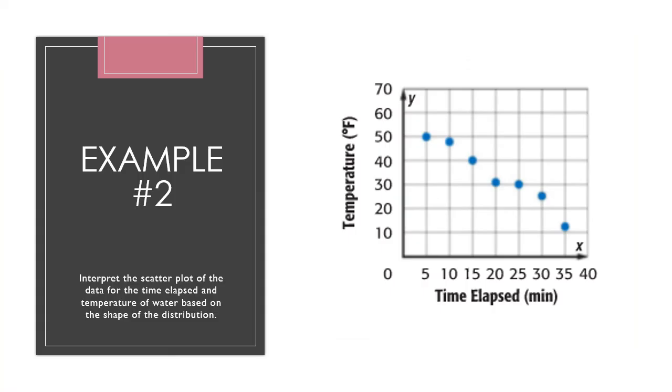Let's look at example number two. It says interpret the scatter plot of the data for the time elapsed and temperature of water based on the shape of the distribution. So there's three big things I want you to tell me. What do you notice as the time increases? So first thing we would write down, as time increases, the temperature of the water decreases. That's my first thing. Next thing, you tell me, is this a positive association or is this a negative association? As I'm looking at my points, as the time goes on, the temperature is dropping. So this is a negative association.